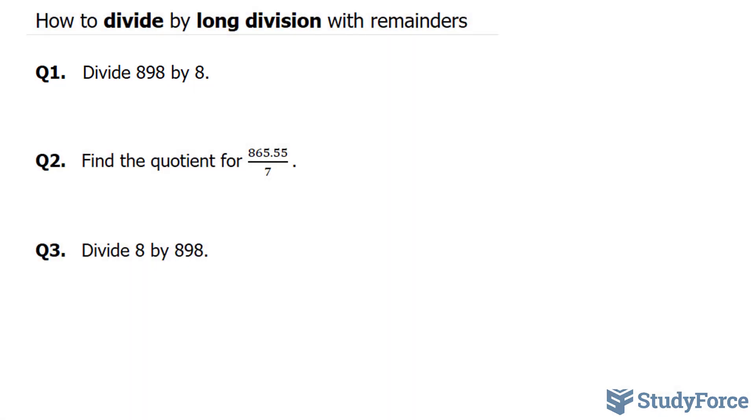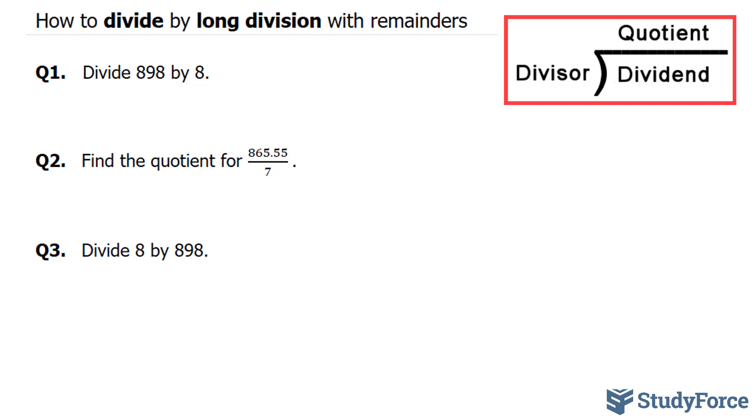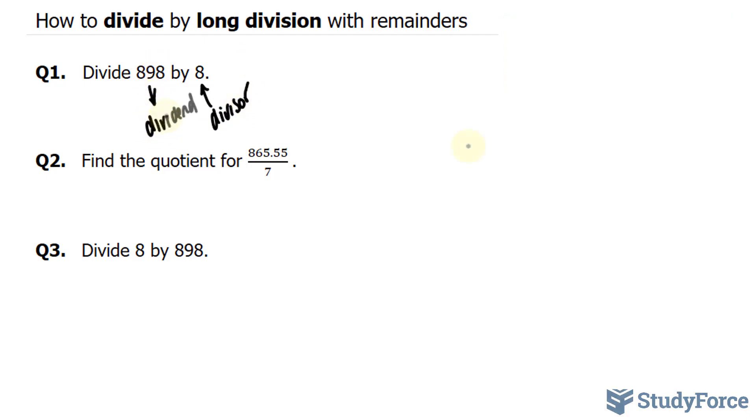The first thing that you want to determine here is what your dividend and what your divisor is. Our divisor is the 8, and our dividend is 898. The way we organize this by long division is we write our divisor and our dividend right next to each other and separate them by this line.